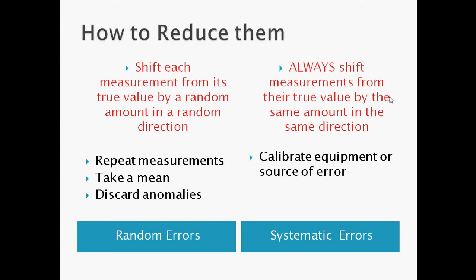But the way to reduce it is to calibrate the equipment or the source of error because it's always due to a certain thing that is wrong in the whole apparatus, in the whole system, and is always making the error going in a direction and by a certain amount. So if I calibrate the equipment, if I look for zero errors, any of these things, I can eliminate then the source of error.